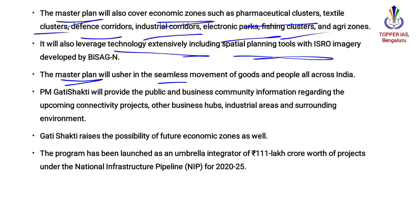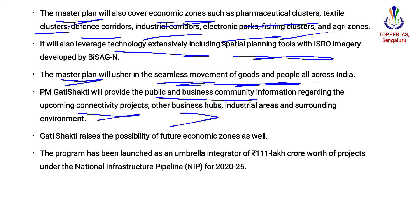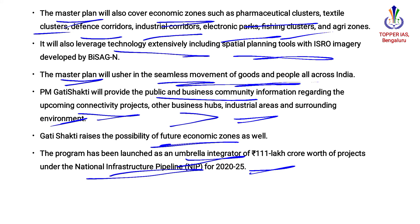The master plan will ensure seamless movement of goods and people all across the country. It will also leverage technology extensively, especially for spatial planning tools. It provides public and business community information regarding upcoming connectivity projects, business hubs, industrial areas, and the surrounding environment. It is also an umbrella integrator, with an estimated cost of about 111 lakh crore, and the project is under the National Infrastructure Pipeline for 2020-25.